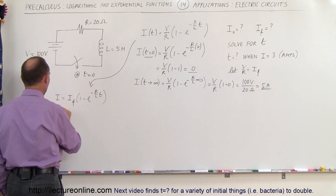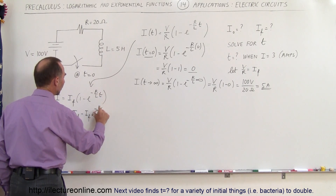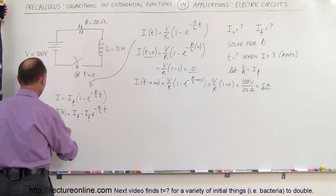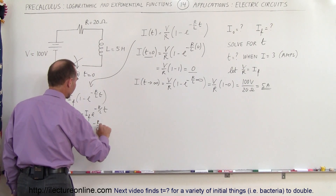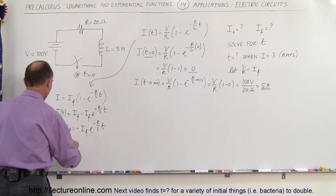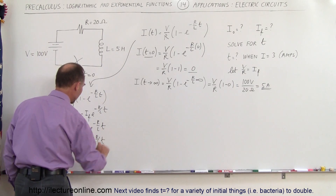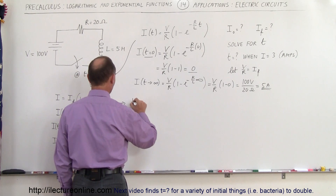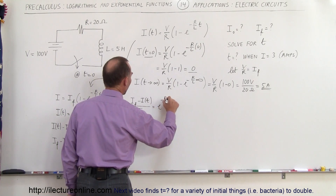Multiplying through, I as a function of time equals I final minus I final times E to the minus R over L times T. Subtracting I final from both sides gives I(t) minus I final equals negative I final times E to the minus R over L times T. Multiplying both sides by negative 1: I final minus I(t) equals positive I final times E to the minus R over L times T. Dividing both sides by I final isolates the exponential: (I final minus I(t)) divided by I final equals E to the minus R over L times T.